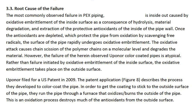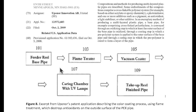Rather than failure initiated by oxidative embrittlement of the inside surface, the oxidative embrittlement takes place on the outside surface. Uponor filed for a US patent in 2009. The patent application (Figure 8) describes the process they developed to color coat the pipe. In order to get the coating to stick to the outside surface, they run the pipe through a furnace that oxidizes and burns the outside of the pipe. This oxidation process destroys much of the antioxidants from the outside surface. Figure 8 is an excerpt from Uponor's patent application describing the color coding process using flame treatment, which destroys antioxidants on the outside surface of the PEX pipe.